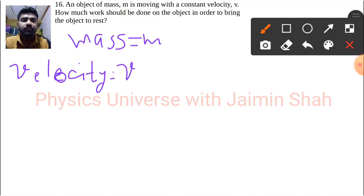Okay, so mass and velocity we have, and we have to find the work done. Now earlier we discussed that work done is in the form of change in kinetic energy, right? So what is this formula?